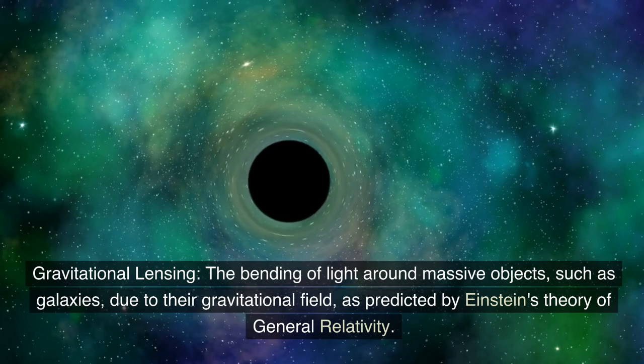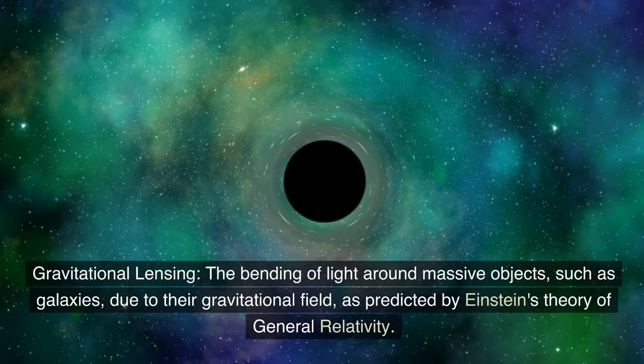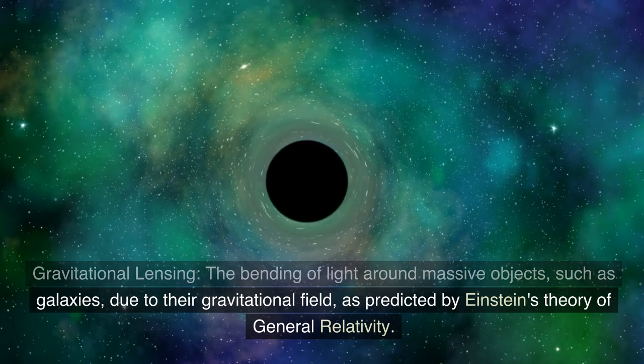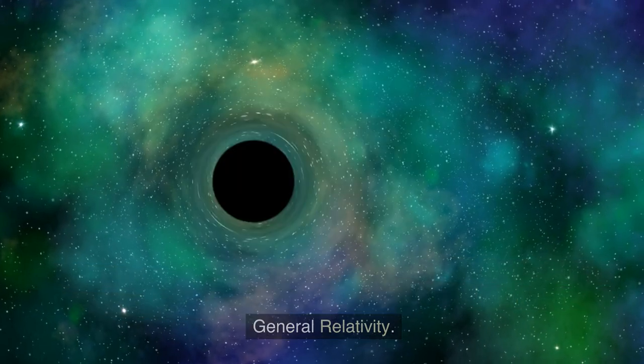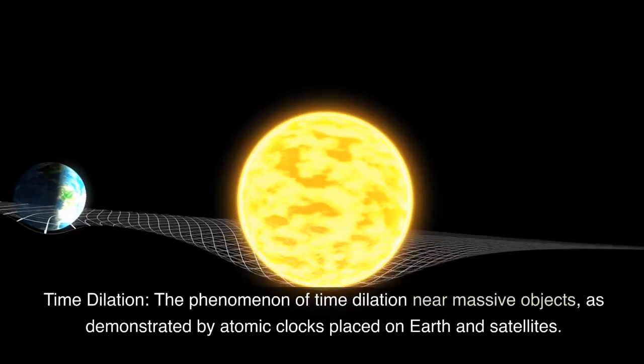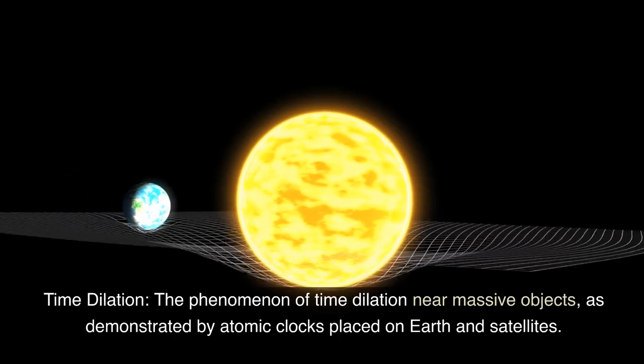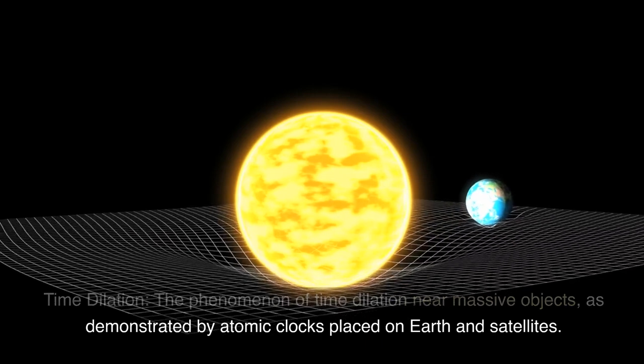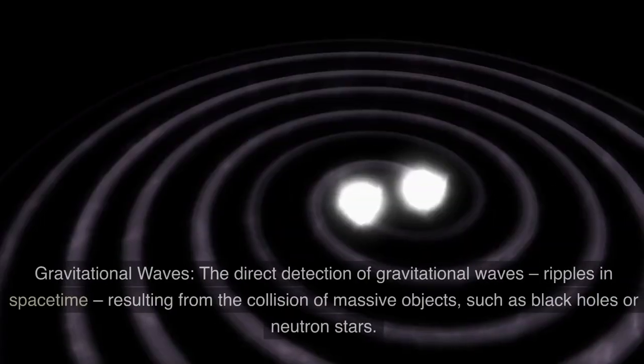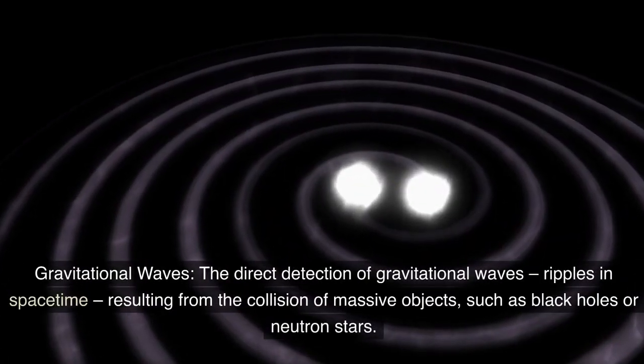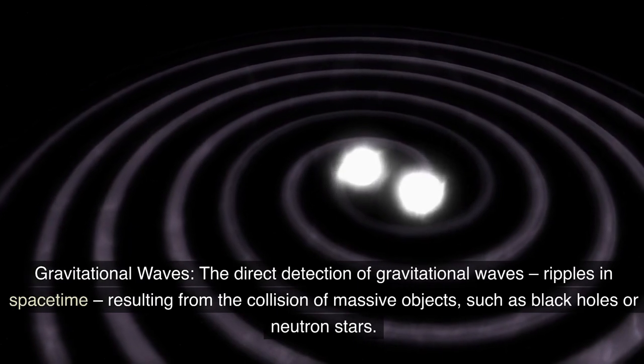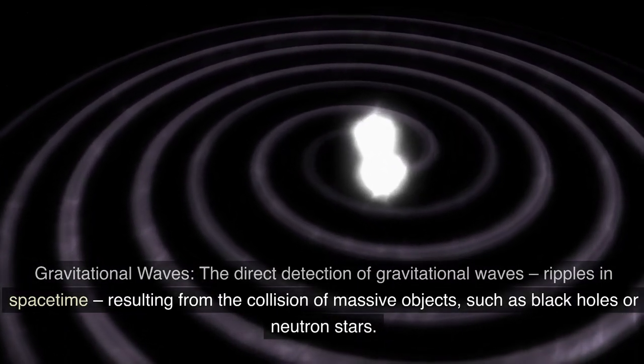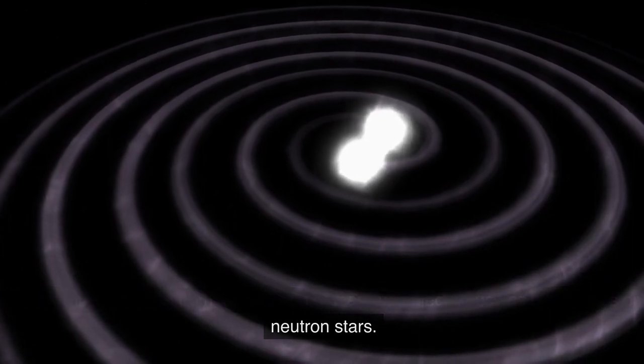Gravitational lensing, the bending of light around massive objects, such as galaxies, due to their gravitational field, as predicted by Einstein's theory of general relativity. Time dilation, the phenomenon of time dilation near massive objects, as demonstrated by atomic clocks placed on Earth and satellites. Gravitational waves, the direct detection of gravitational waves, ripples in spacetime, resulting from the collision of massive objects, such as black holes or neutron stars.